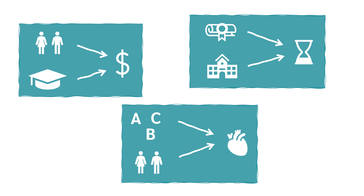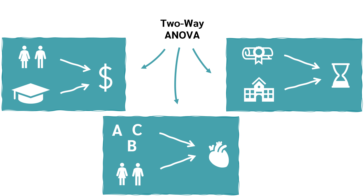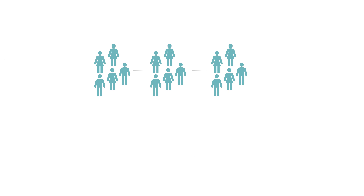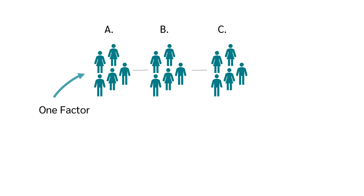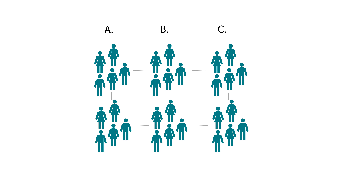Since we now have two factors, we use a two-way analysis of variance. In a one-way ANOVA, we have one factor from which we create the groups. If the factor has three levels — for example, three different types of drug — we will have three groups to compare. In a two-way analysis of variance, the group results from the combination of the levels of the two factors. If we have one factor with three levels and one with two levels, we have a total of six groups to compare.